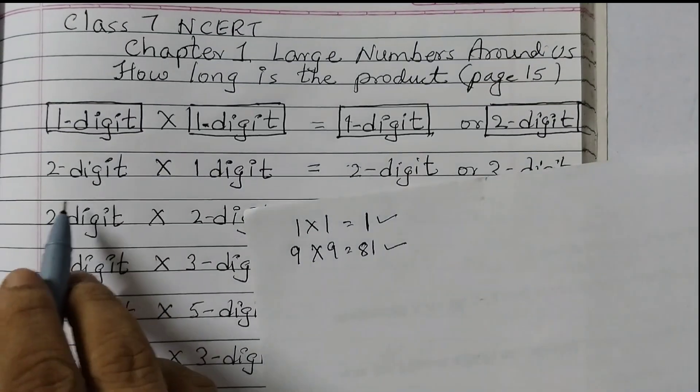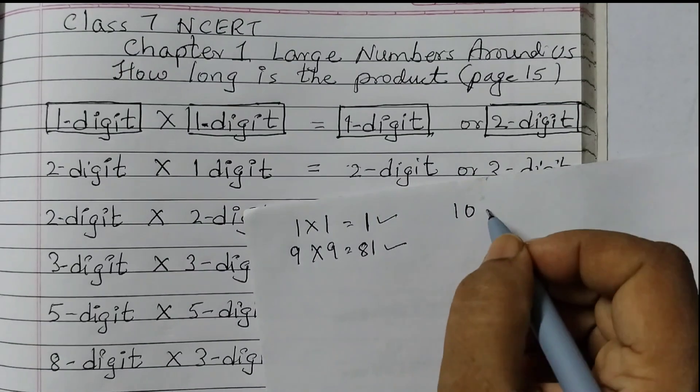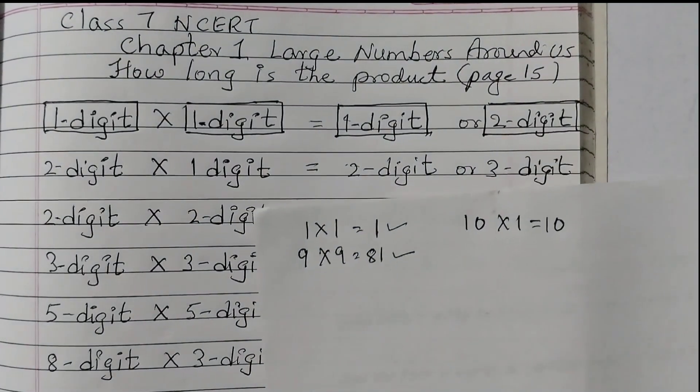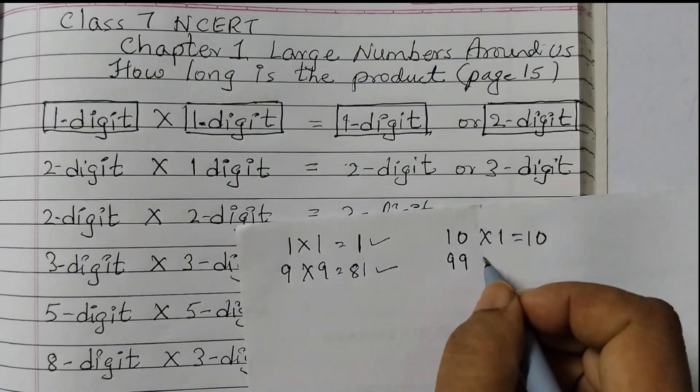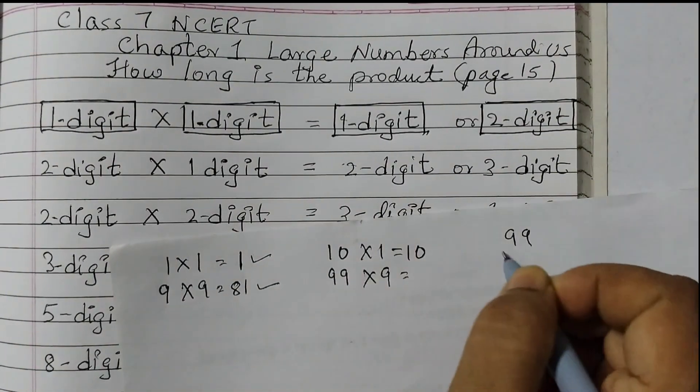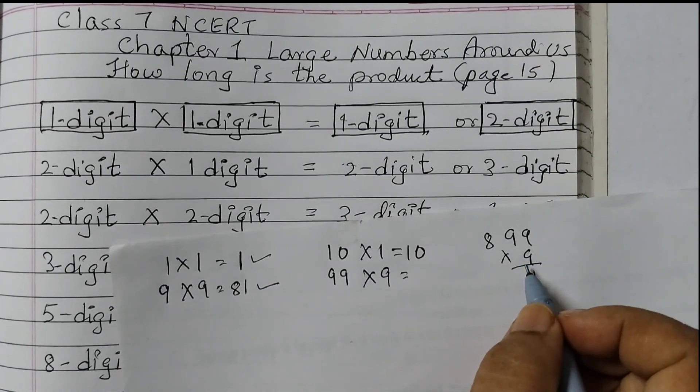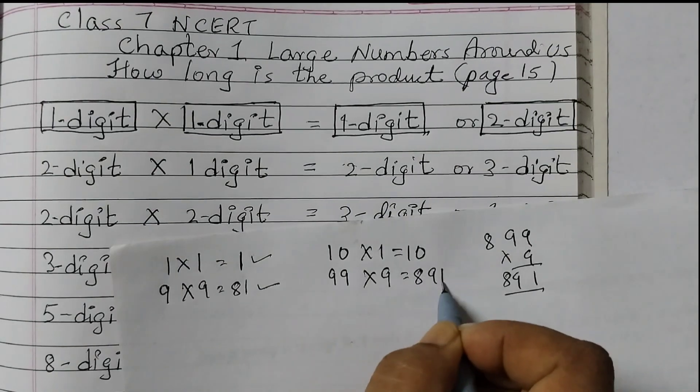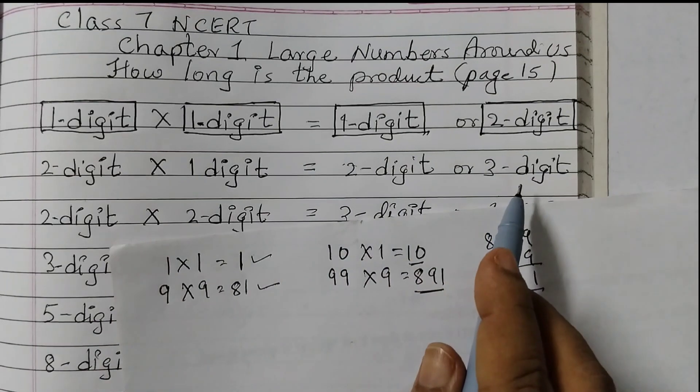Similarly, if I take 2 digit and 1 digit, the smallest 2 digit number is 10 and smallest 1 digit number is 1. 10 ones are 10, I get a 2 digit number. And if I take the largest 2 digit number and the largest 1 digit number, then I would get 99 into 9. 9 nines are 81, 891. I am getting 891. So this is a 3 digit number. This is a 2 digit number.